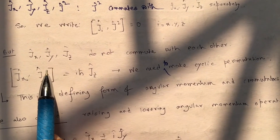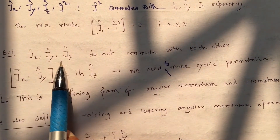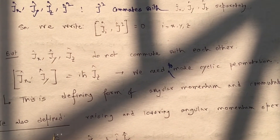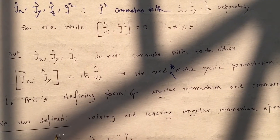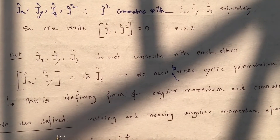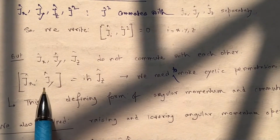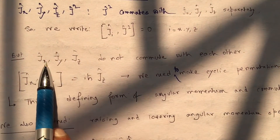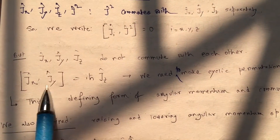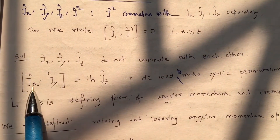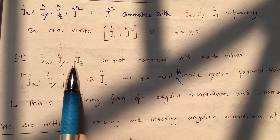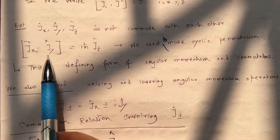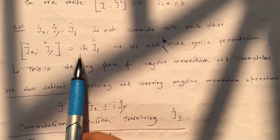Classically, we can measure individual values of each component of the momentum operators. Quantum mechanically, that is not possible — it is restricted by the uncertainty principle. This is the commutation relation of Jx and Jy. Likewise, we can write the commutation relations of Jy with Jz, and Jz with Jx. We have already done this, and this is the defining form — the definition of the commutation relation of angular momentum.